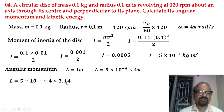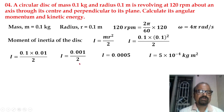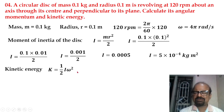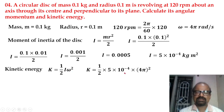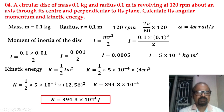The angular momentum is I times omega, giving 62.8 × 10⁻⁴ kg·m²/s. For kinetic energy, using half I omega squared, we get the answer 394.3 × 10⁻⁴ joules, which equals 0.0394 joules.